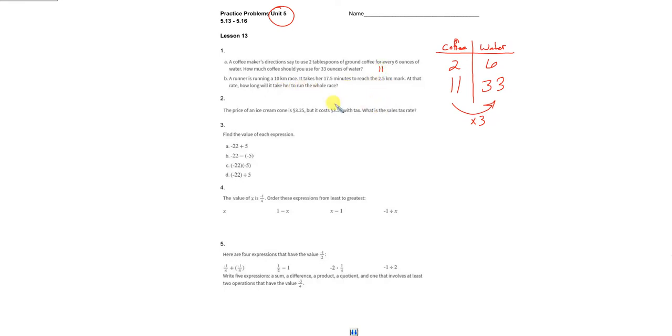Problem 1A: 11. A runner is running a 10 kilometer race. It takes them 17 and a half minutes to reach the two and a half kilometer mark. At that rate, how long will it take to run the whole race? It's another proportional relationship - you have kilometers and minutes.